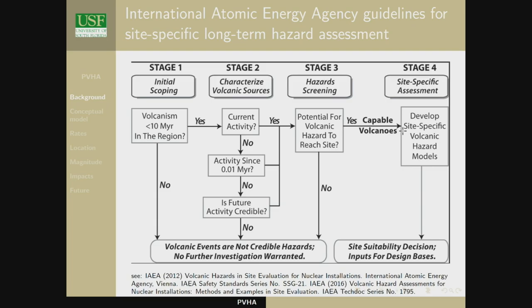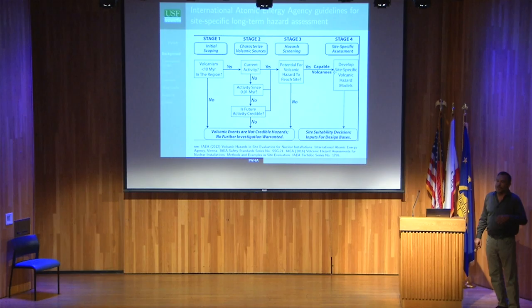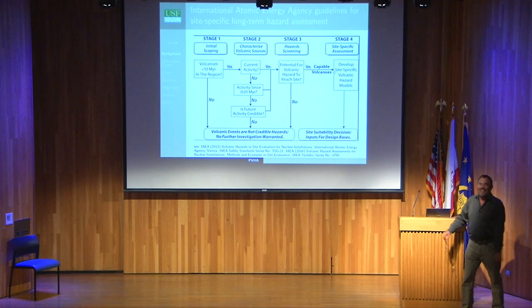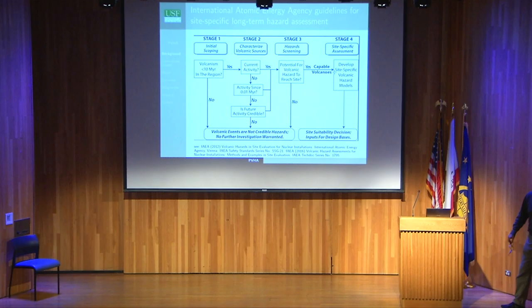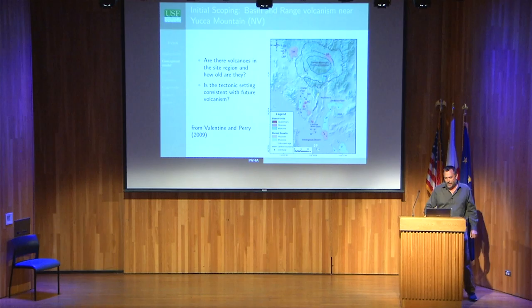It's a good framework for organizing a hazard assessment, though there are compromises. You see things like 'initial scoping: is there volcanism less than 10 million years old?' — 10 million years seems absurd, but the volcanologists had a conceptual model and the IAEA engineers basically said 'you need to give us a number,' so we gave them a conservative one. In terms of initial scoping, one of the most expensive volcanology projects in US history: how do you site a radioactive waste repository?